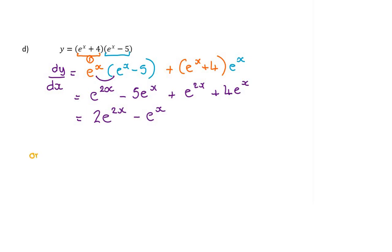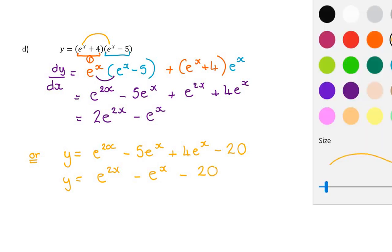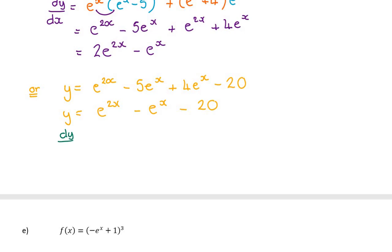Alternatively, if you multiply out the product first: e to the x plus x is e to the 2x, minus 5e to the x, plus 4e to the x, minus 20 — which is e to the 2x minus e to the x minus 20. Now differentiating: e to the 2x is a chain rule with inside function 2x, which differentiates to 2. So the half and 2 cancel, giving e to the 2x. Both methods give the same answer and were probably the same amount of effort.